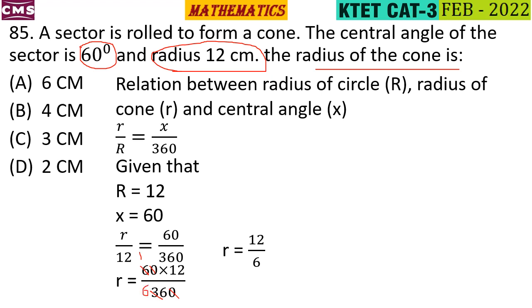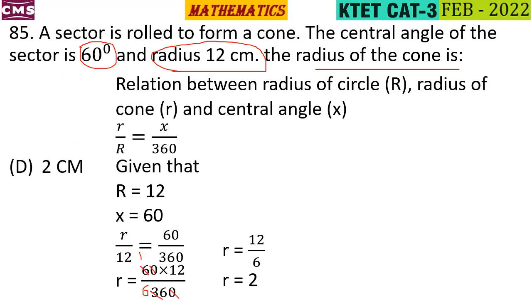Calculating: 12 times 6 over 360 gives 2 cm. Option D.